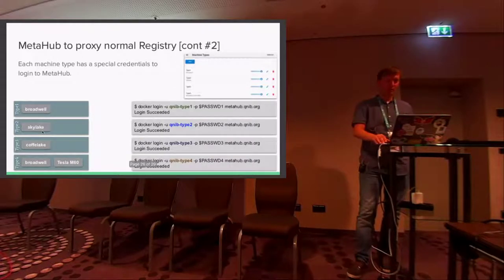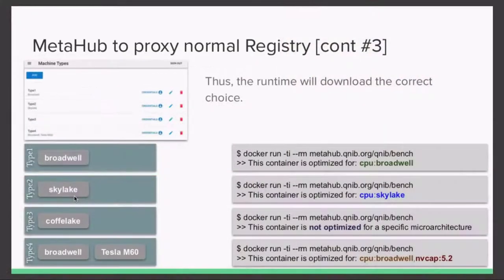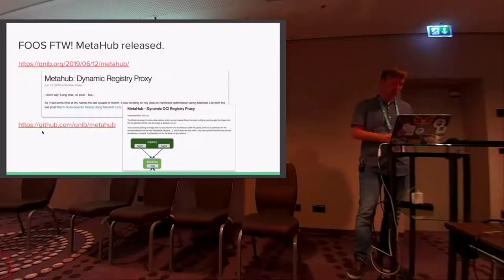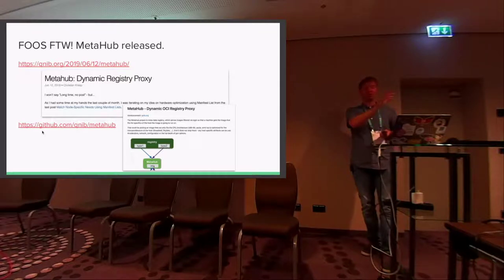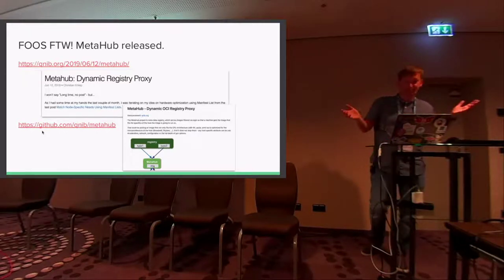You can also change the login before you start a job so that you get a different type of image. So you log in with type 1, and when you do a pull of this manifest list proxy image, it will download the correct one because it knows what runtime requires what features. You can change this on the fly. I have a blog post explaining it, it's open source — feel free to use it, contribute, raise issues. And of course this functionality could also be included in all the registries — registry providers are welcome to pick it up.